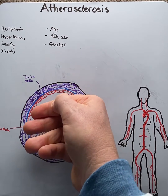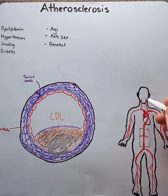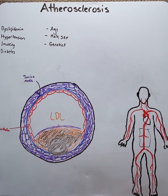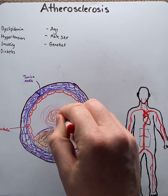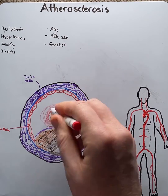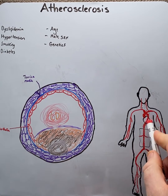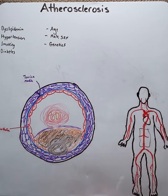The plaque continues to grow, which causes a critical stenosis. If this is in the cerebral vessels, it can lead to ischemic stroke, or if it's in the coronary vessels, it can lead to angina. Or if the plaque ruptures, it causes a clot to form — a thrombus — which starts to block off the artery, which could lead to a heart attack or MI in the heart, or an embolic stroke in the brain.